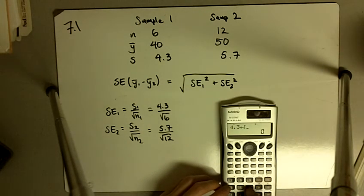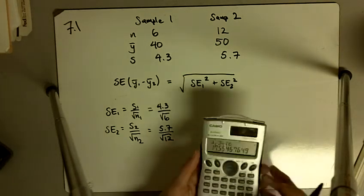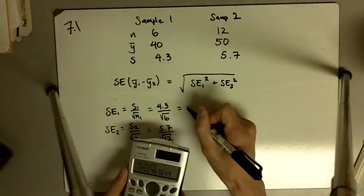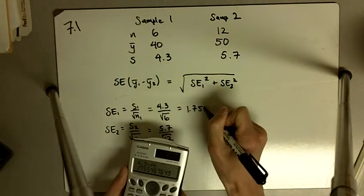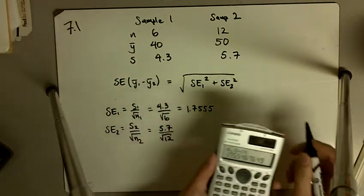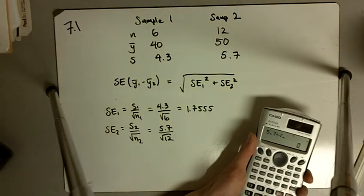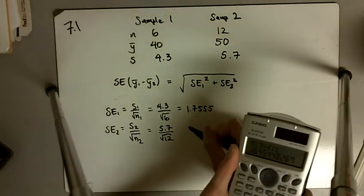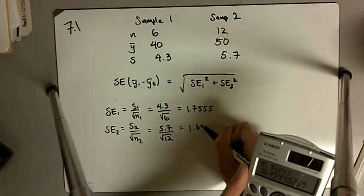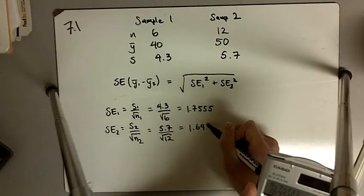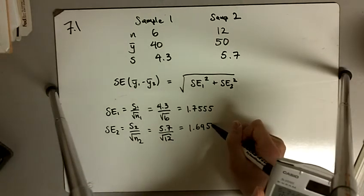4.3 divided by the square root of 6 gives 1.7555. And then 5.7 divided by the square root of 12 gives 1.6454.